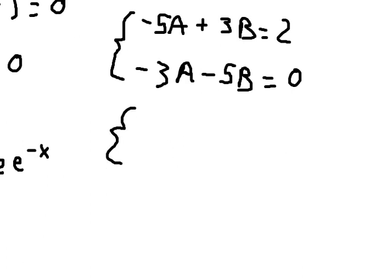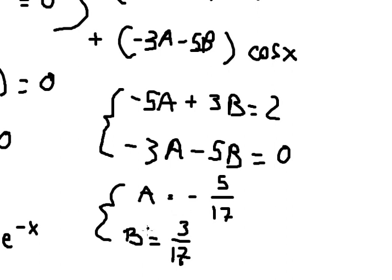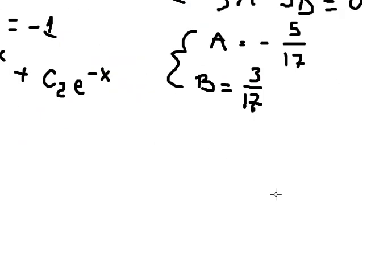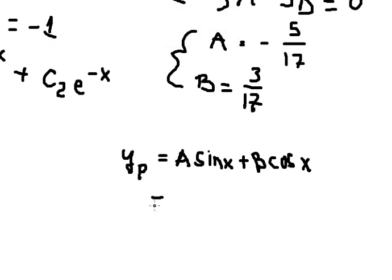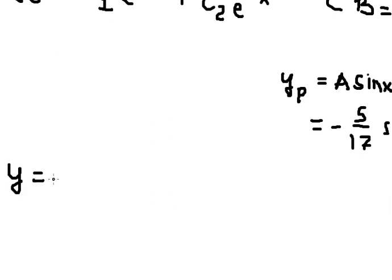Solving the system, we find A equals negative 5 over 17 and B equals negative 4 over 17. We substitute A and B back into the expression for yp.